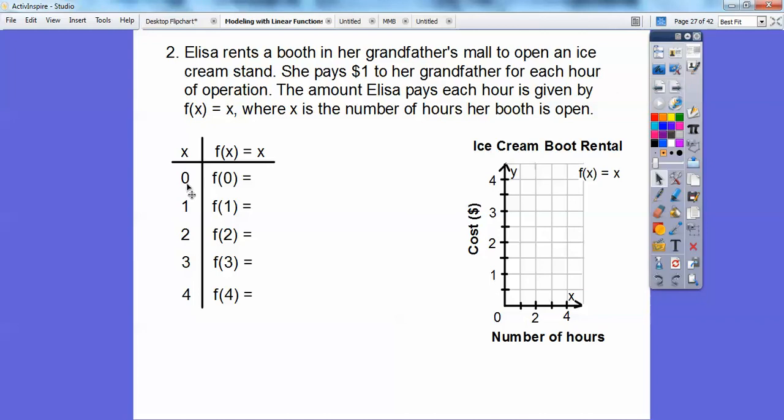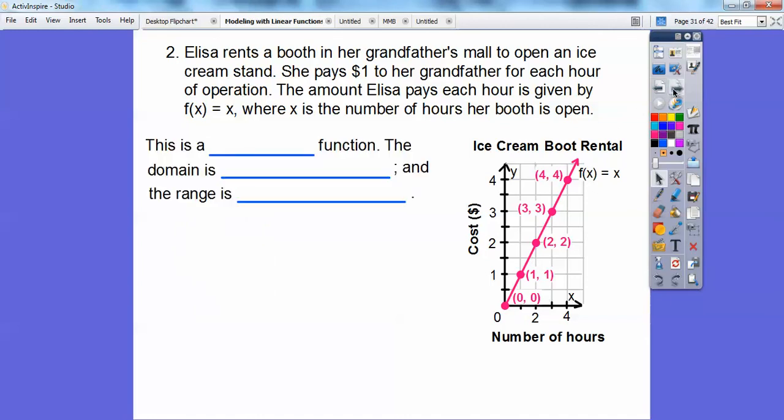So x hours is zero, one, two, three, four. f(x) is just x. So whatever this is, that's what this is. Zero, one, two, three, four, because y equals x. Remember, f(x) equals x. We get those points, and when we graph them, we're going to connect them because we can do a half of an hour, and a half of an hour would cost 50 cents. So this one's going to be a continuous function.